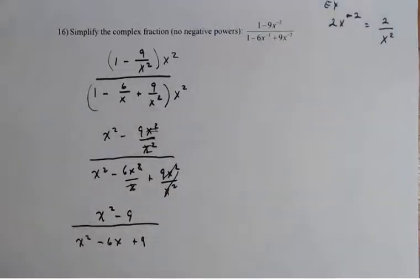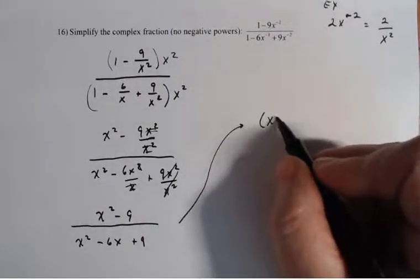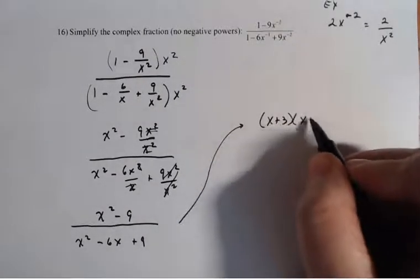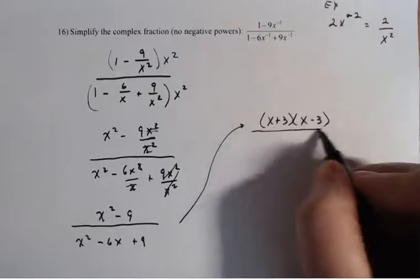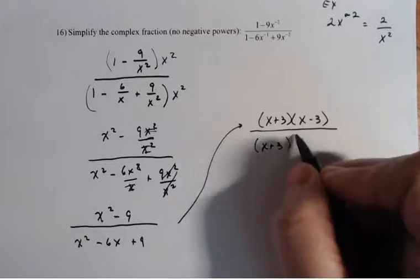Now you're hoping that you're done, but you're not. You can actually factor this. The numerator factors to x plus 3 times x minus 3. It's a difference of squares. And the denominator factors to x plus 3 times x plus 3.